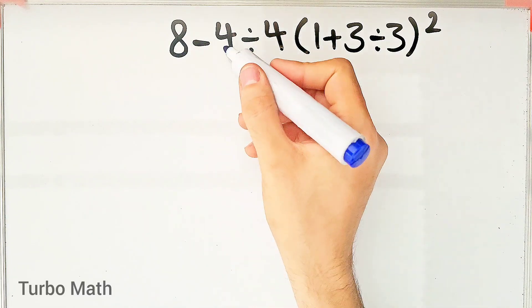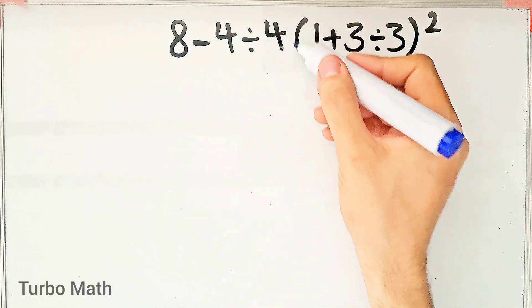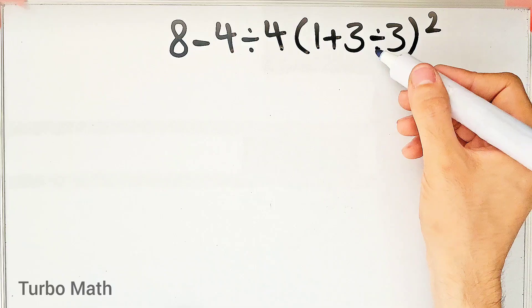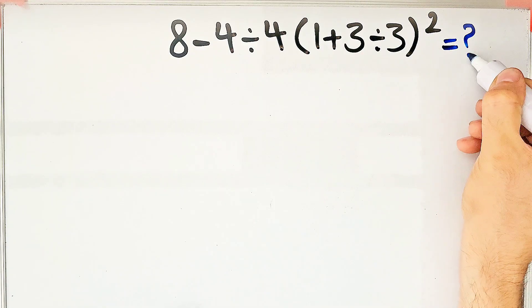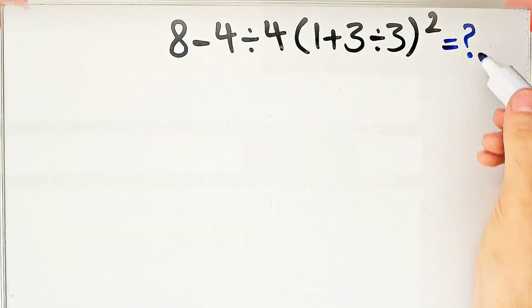Hi friends, welcome to Turbo Math channel. 8 minus 4 divided by 4 then times open parenthesis 1 plus 3 divided by 3 closed parenthesis to the power of 2. What is the answer of this question? Can you solve it?